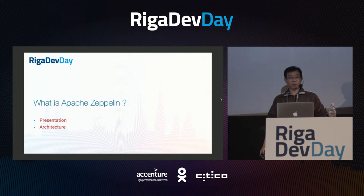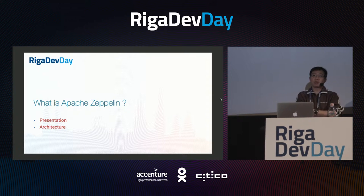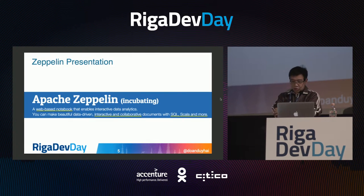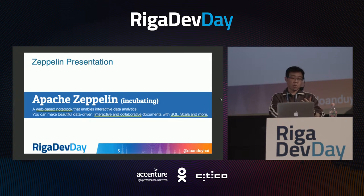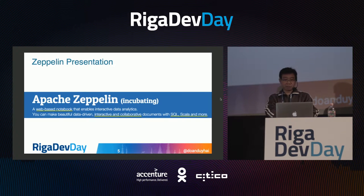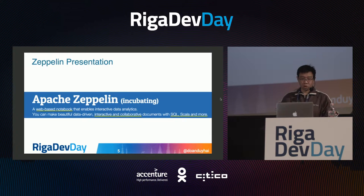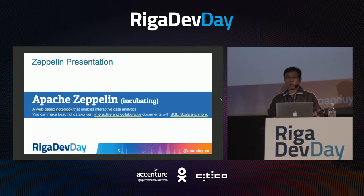So what is Apache Zeppelin? Right now this project is still incubating. If you go to their website, they say that Zeppelin is a web-based notebook that allows you to play with your data in an interactive way, to exchange your data with your friends and coworkers, and you can interact with your data using SQL, Scala, and more.